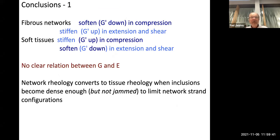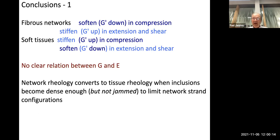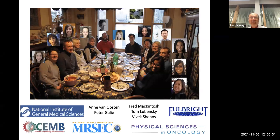In summary, the contrast between fiber networks and tissues is striking. Fiber networks soften when you compress them and stiffen when you shear and stretch them. But soft tissues, which are made out of these fiber networks, don't - they stiffen when you compress them and soften in extension and to some extent in shear. There's also no obvious relation between the shear modulus and the Young's modulus, which has been explored less for tissues than for fiber networks. The way to convert the fiber-like response to a tissue-like response is to put volume-conserving particles in it that constrain the configuration changes the fibers can undergo.